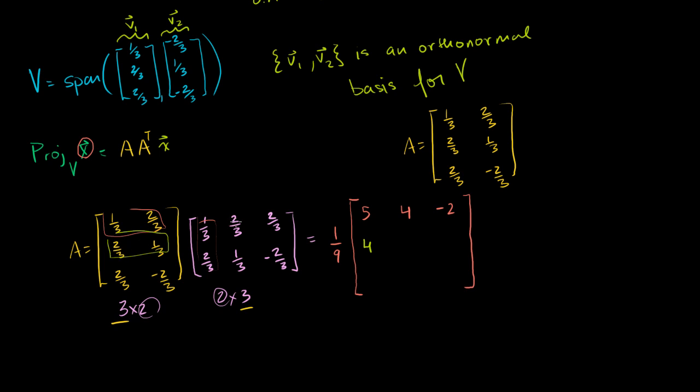2 9ths, oh no, sorry. 2 3rds times 2 3rds is 4 3rds. So it's 4, sorry. 2 3rds times 2 3rds is 4 9ths plus 1 9th is 5 9ths. And then we have 4 9ths minus 2 9ths is 2 9ths. And then let's do this last one. We're almost there.